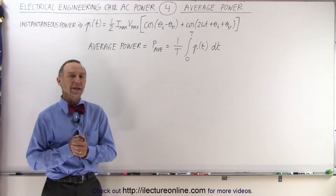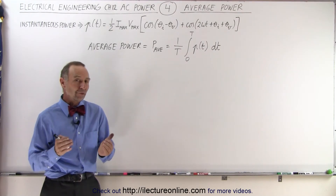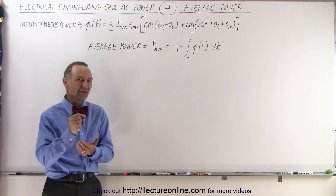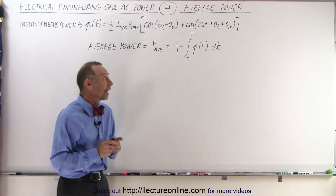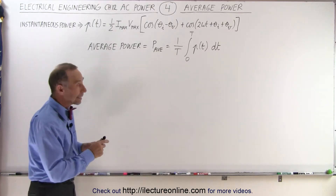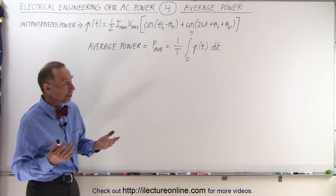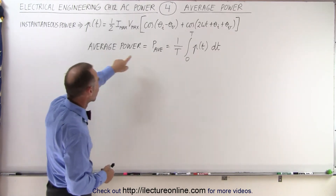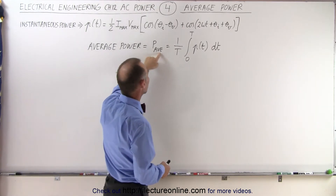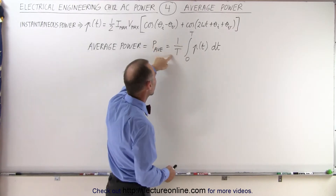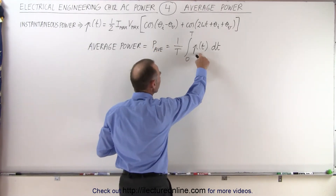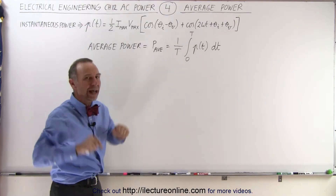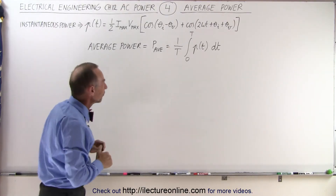Welcome to our lecture online. So far we have seen how to calculate the instantaneous power. Now let's find out how to calculate the average power. From calculus, if we take the average power of something, we simply take 1 over the period times the integral of the function over the period. That should give us the average value of the function.